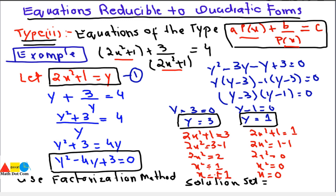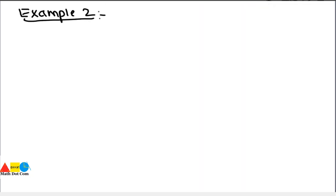So the solution set is {-1, 1, 0}. This is how you can solve equations of this type, where a polynomial expression appears commonly in the numerator or denominator, by simplifying using the substitution method. Let's have one more example.